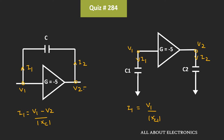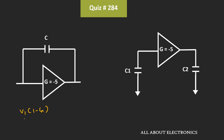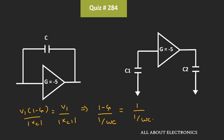This voltage V2 can be given as G times V1, because V1 gets amplified by the factor G. From this we can say that current I1 is equal to V1 minus G times V1, divided by Xc, which is equal to V1 times (1 - G) divided by Xc. These two currents should be equal, so from this we can say that (1 - G) divided by Xc equals 1 divided by Xc1. If we further simplify, then capacitance C1 is equal to (1 - G) times C.